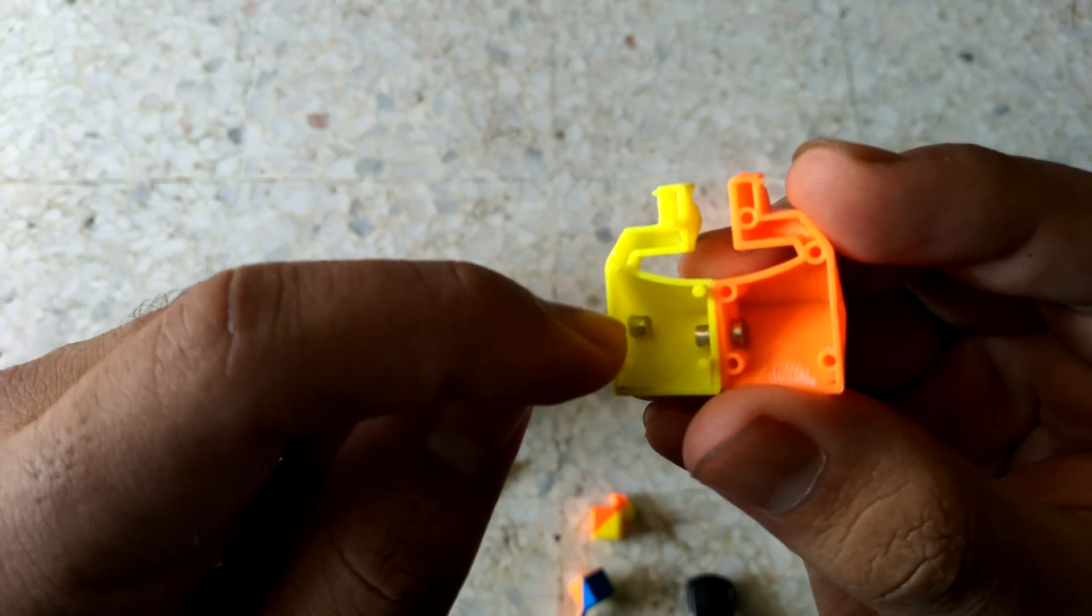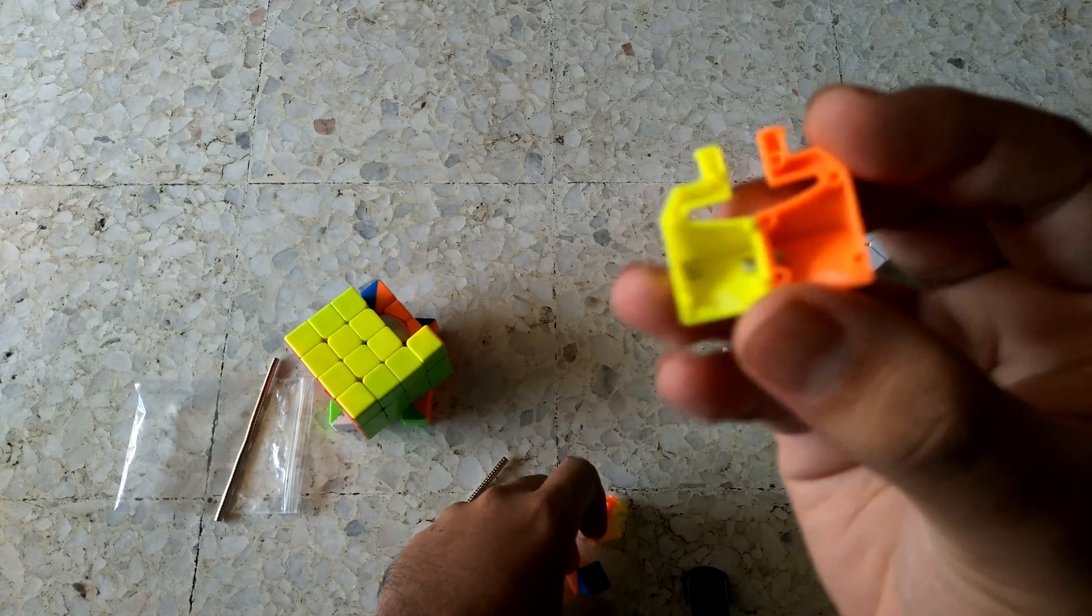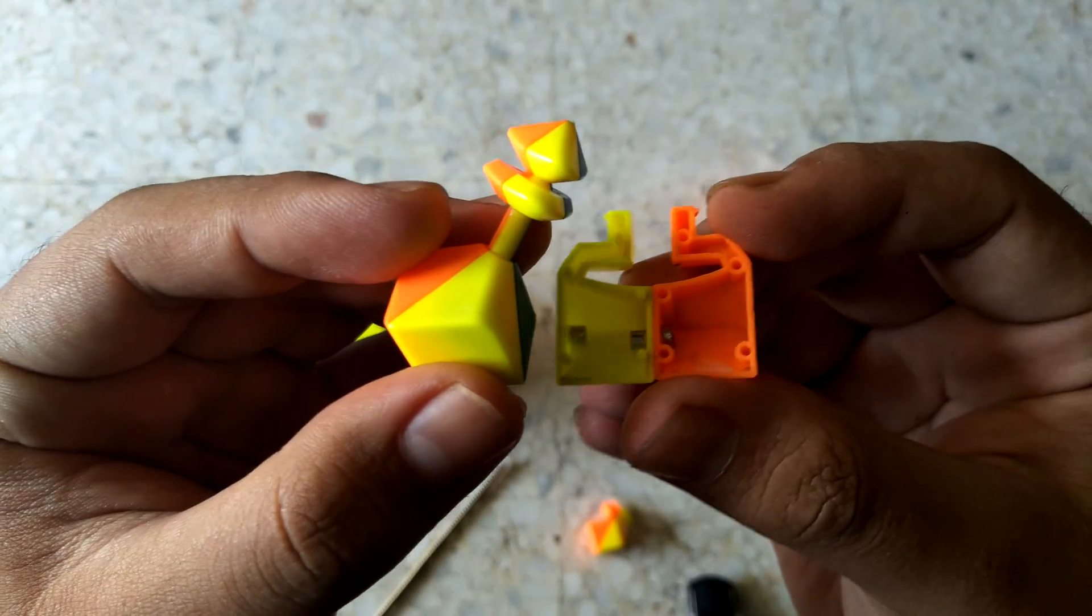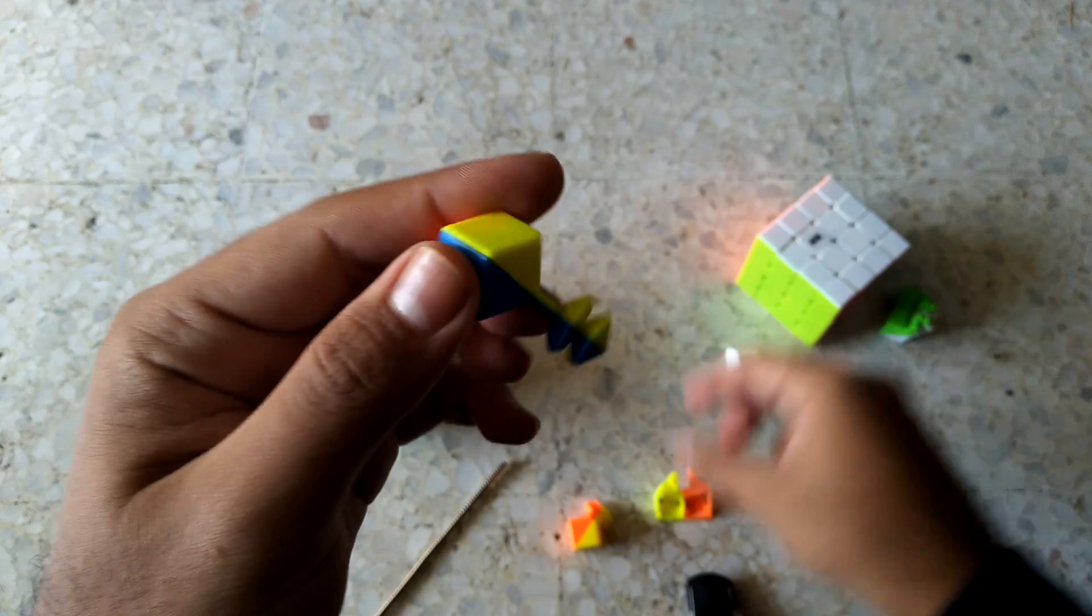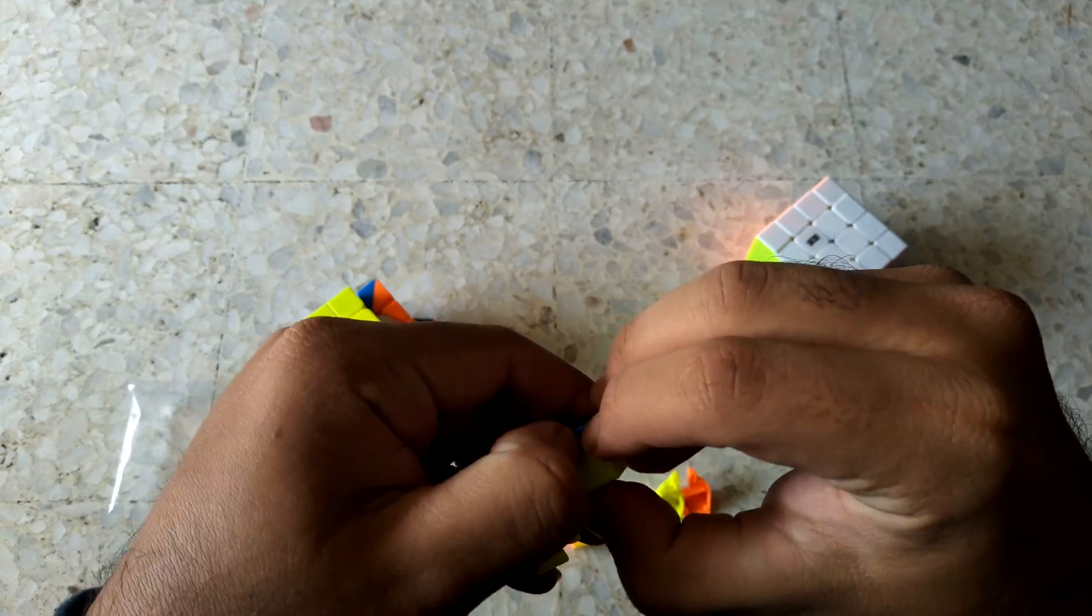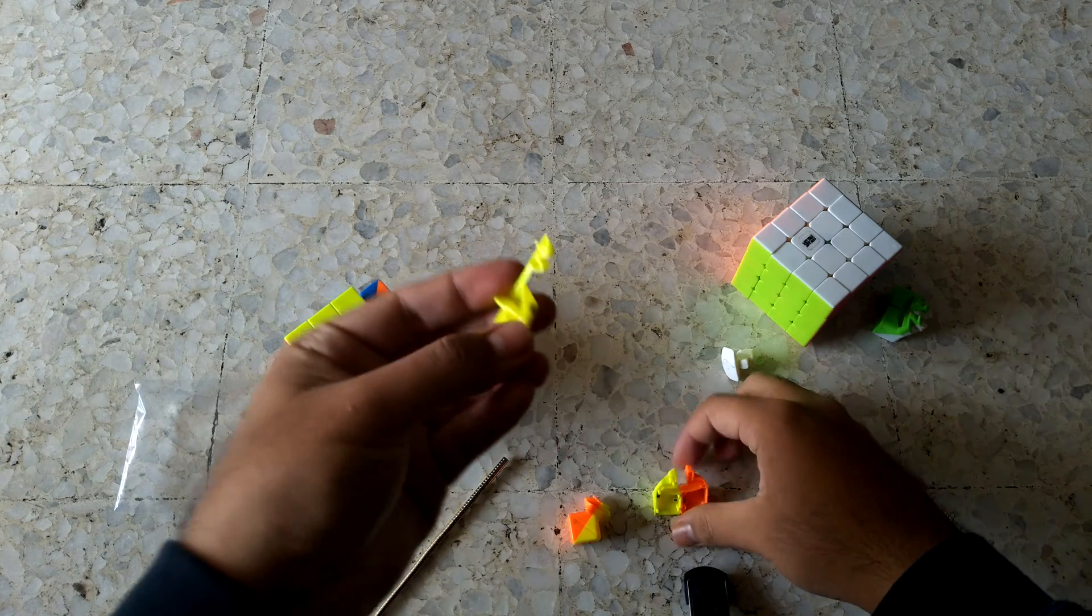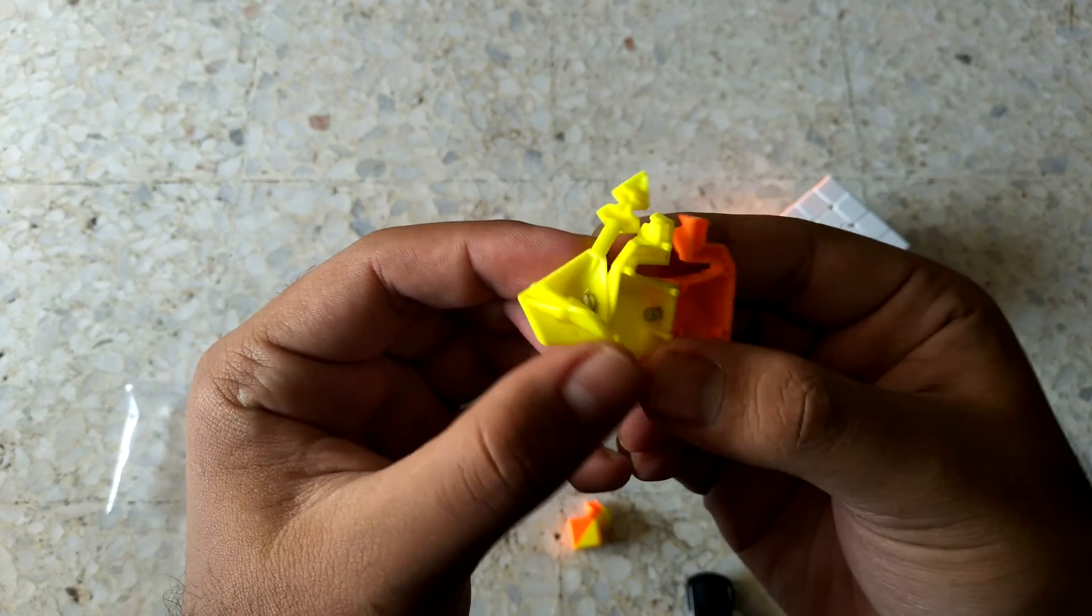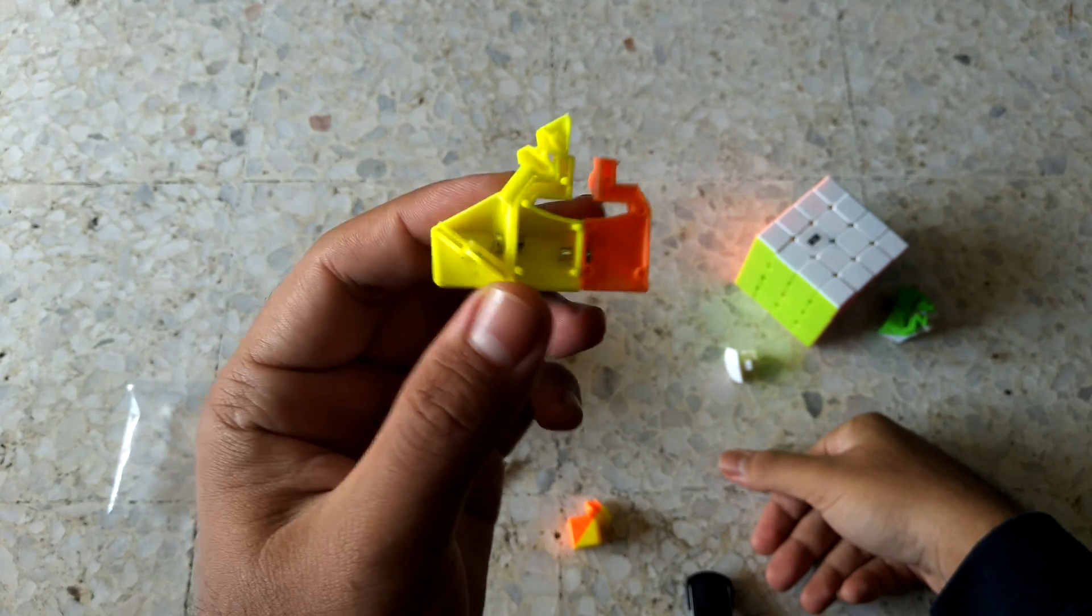And then this magnet at the left is for the corners like that. We actually have one more inside here. This is actually the only pair that we need to magnetize.